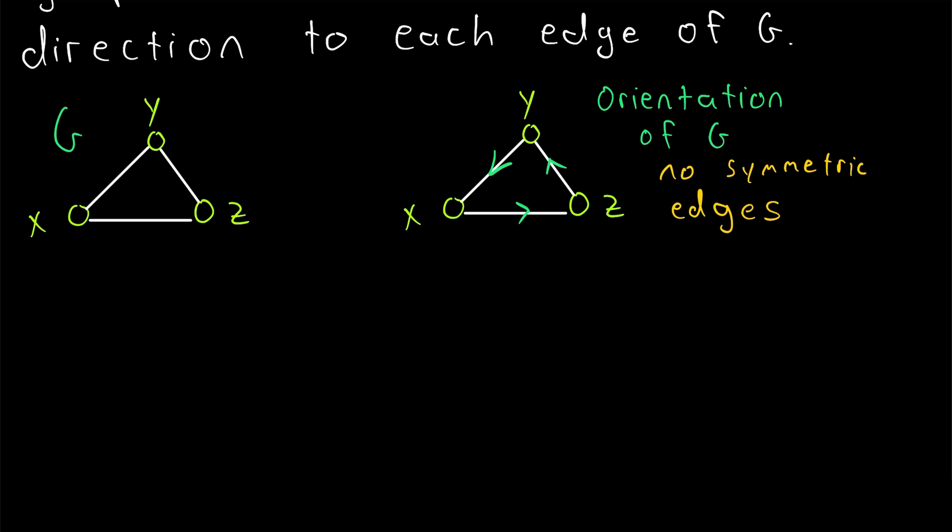In future lessons, we'll also talk about some more special types of orientations. For example, an orientation of a complete graph, like we have here, since this is a complete graph on three vertices, an orientation of a complete graph is called a tournament. So that's pretty cool, and we'll talk more about tournaments in some later lessons, but I think we'll leave it there for now.